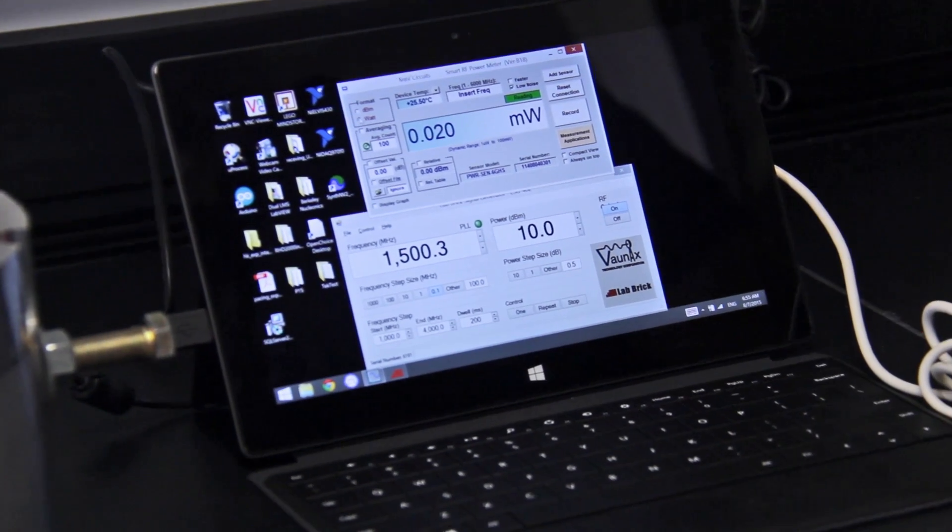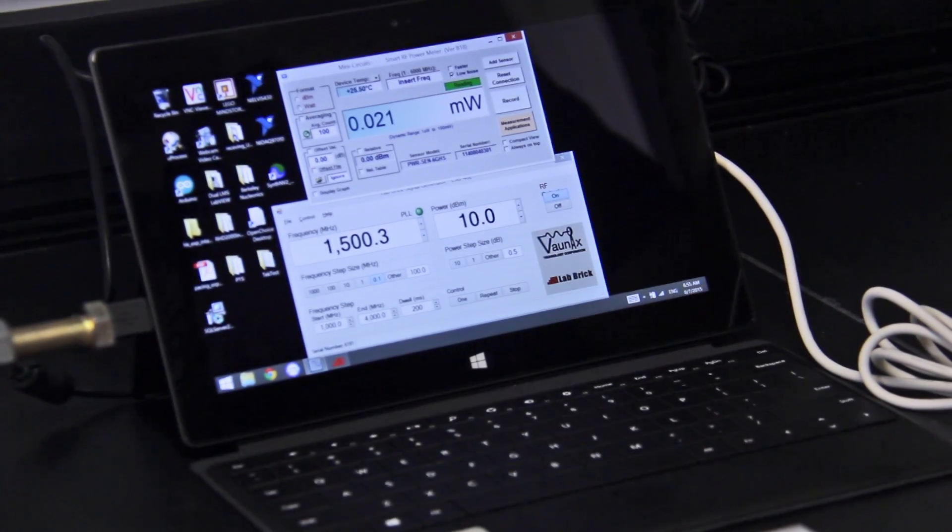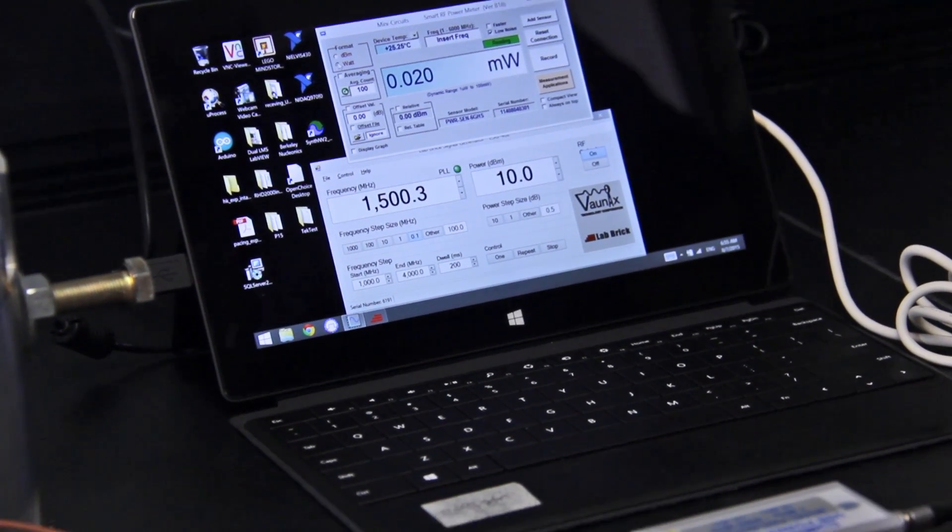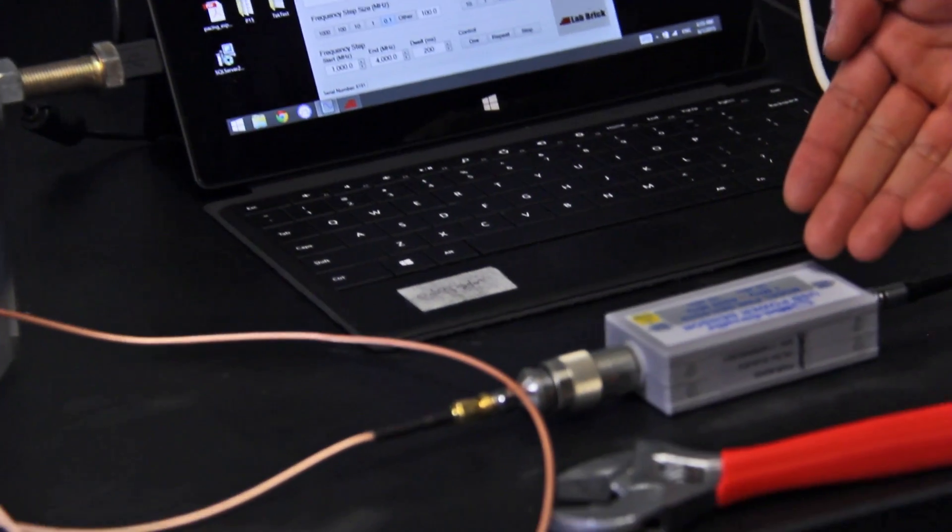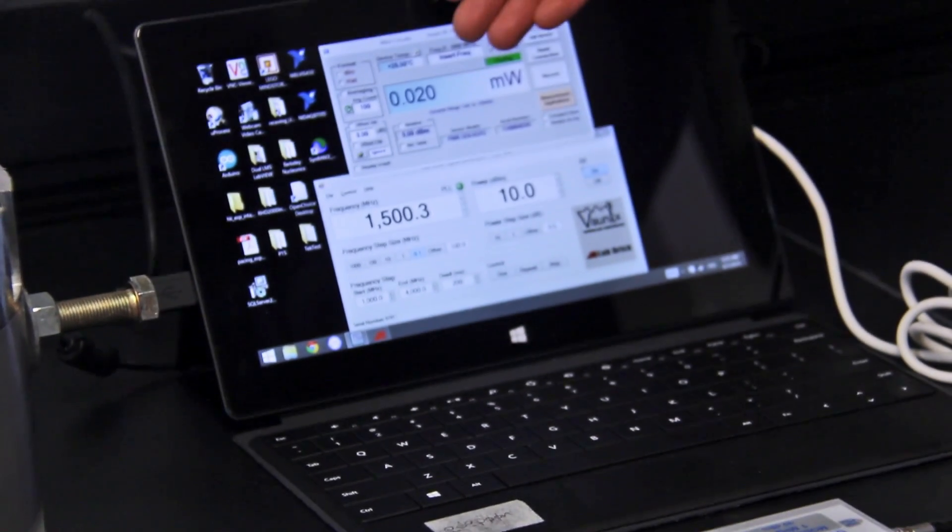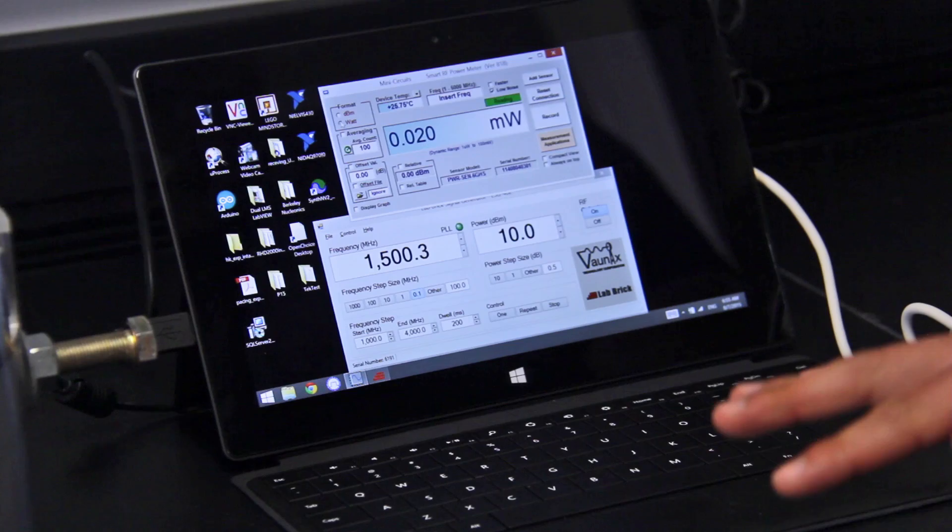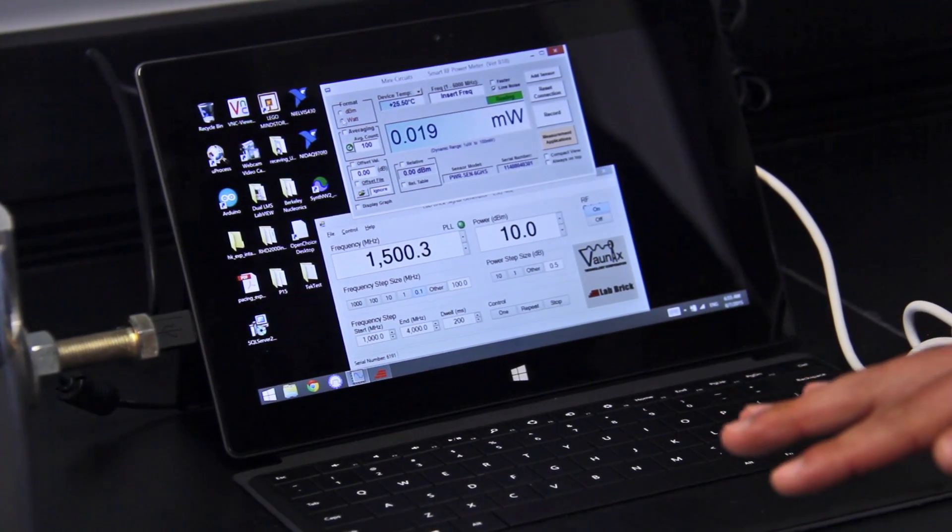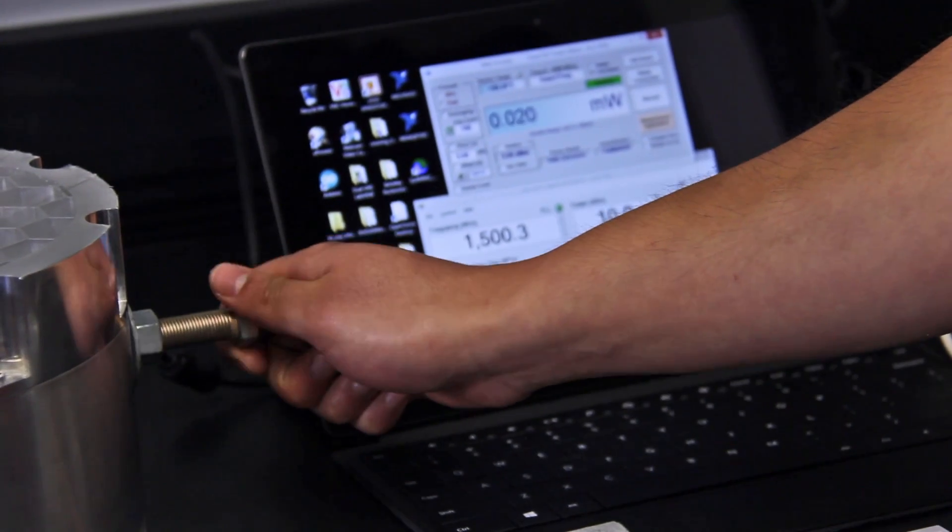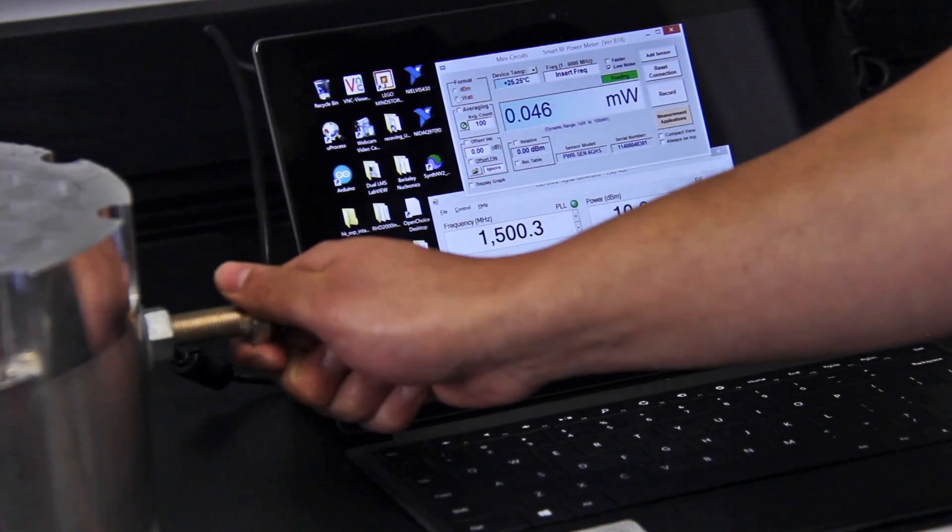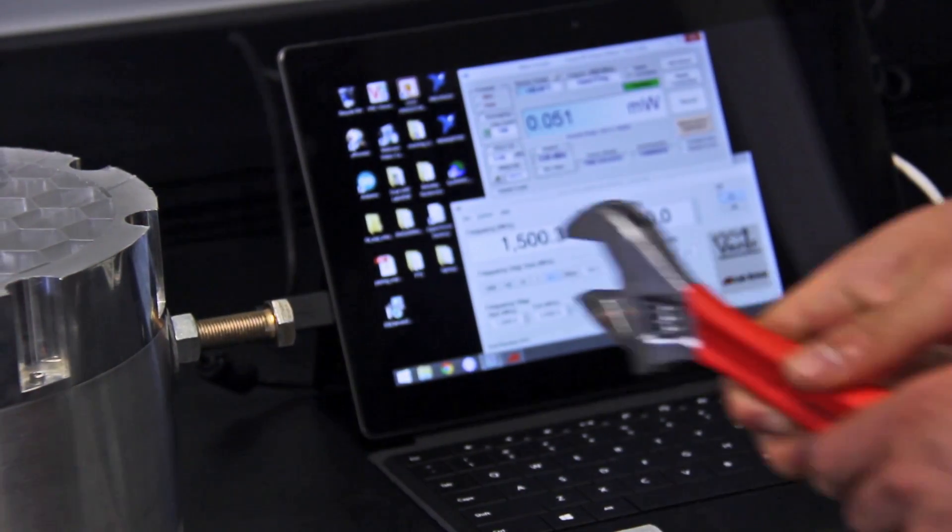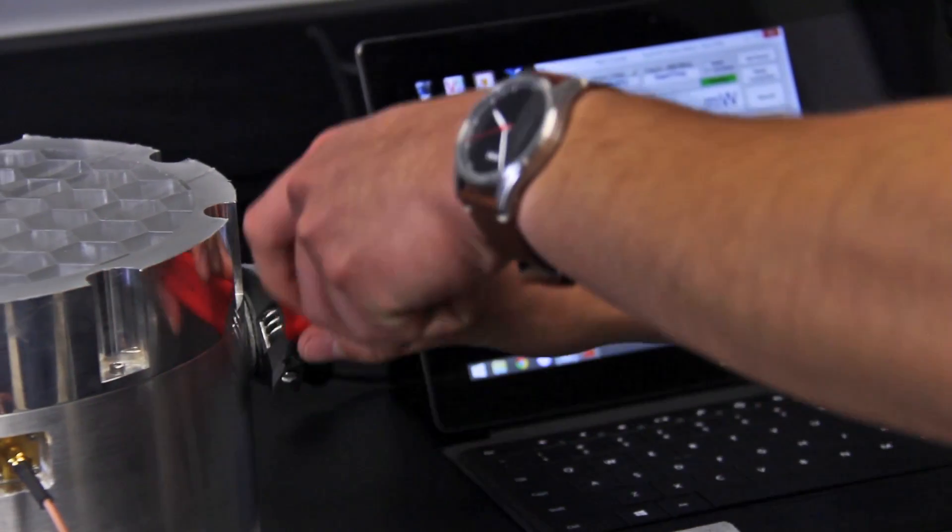Next comes the optional step of confirming that the cavity is operating at the optimal frequency. To do this, I use this USB power sensor. Here you see the reading that's being picked up by the sensor. Optimally, we expect about 0.06 mW. And you can see that as I tune the cavity, this number will increase. And now tighten it with a wrench to make sure there's no leakage current.